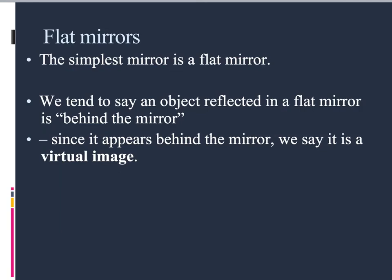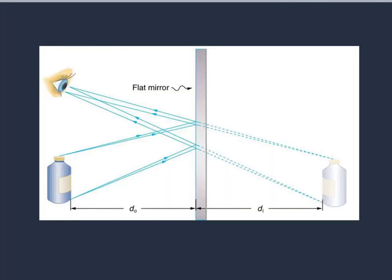So this flat mirror is the simplest form of a mirror. And when we talk about these flat mirrors, we tend to say that an object reflected in a flat mirror is behind the mirror. Because it appears further away from us than the wall or wherever the mirror is sitting. So since it appears behind the mirror, we say it's a virtual image. It's not a real image. And we're going to look at the difference of those in the next section a little bit more carefully.